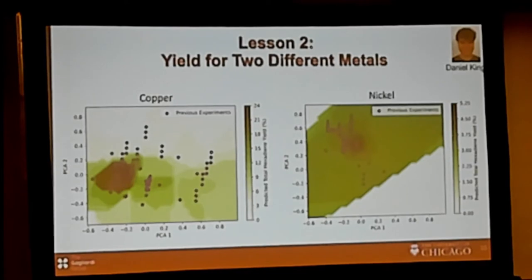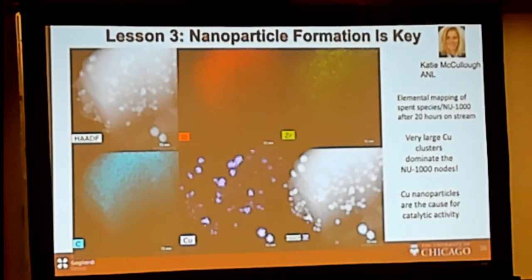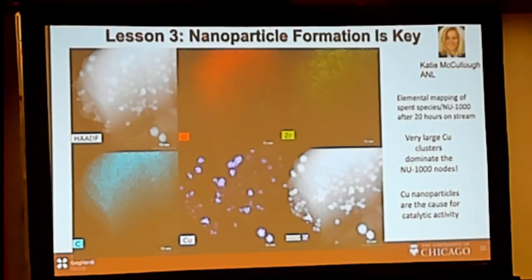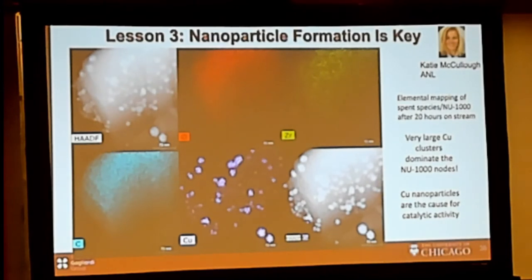Concerning the catalyst structure, the elemental mapping shows that what is present in the copper catalyst are large copper nanoparticles — large copper clusters inside the pores. This is probably why the catalyst is so active: the formation of nanoparticles, which may not happen with all other transition metals. The model therefore has to catch up from this different structural information, which we did not know at the beginning.